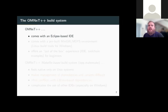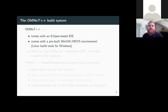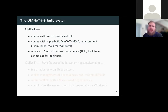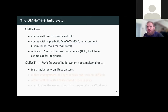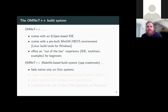OMNeT++ comes with an Eclipse-based IDE and a pre-built MinGW/MSYS environment — Linux build tools for Windows — offering an out-of-the-box experience with a toolchain and many examples for beginners. However, there are drawbacks with the build system. The make file-based system feels native on Unix, but on Windows it's cumbersome to navigate the MSYS environment, especially when you have a strong CMake background.